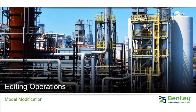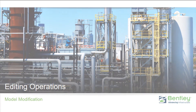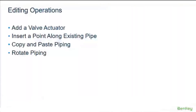We will now move on to our editing operations. We will add a valve actuator, insert a point along an existing pipe, copy and paste piping, and rotate piping.